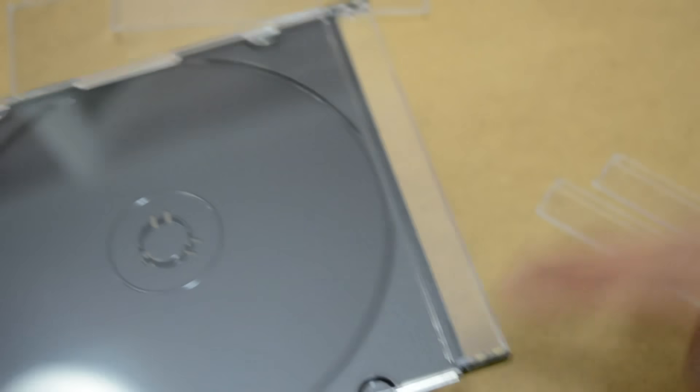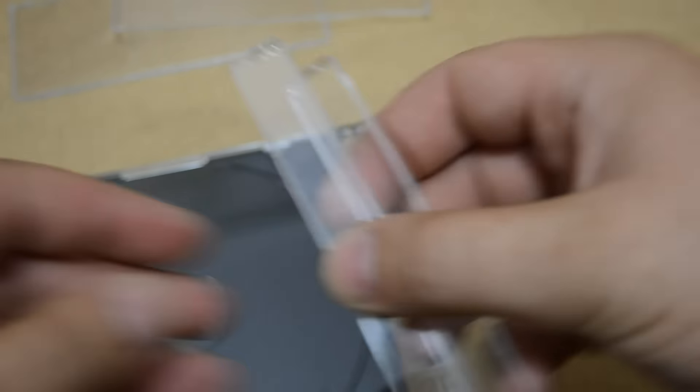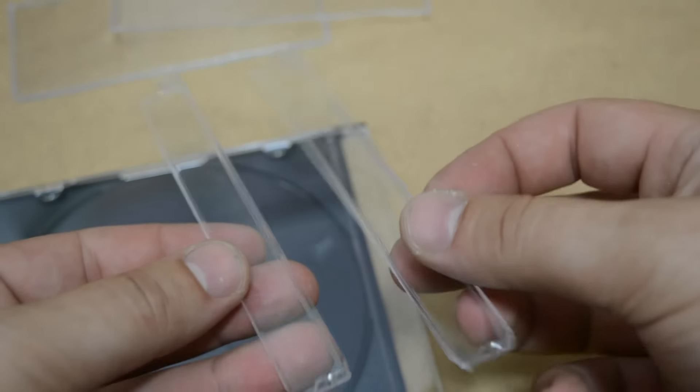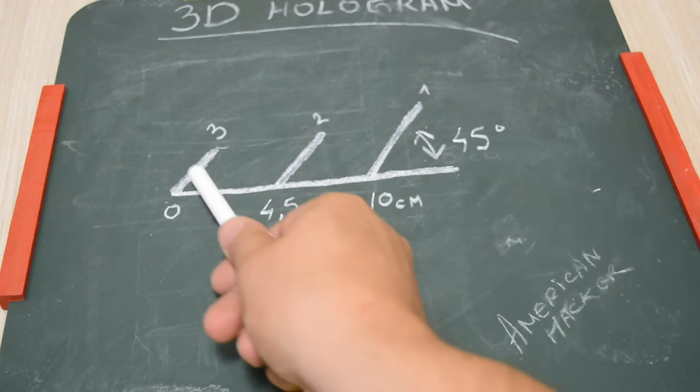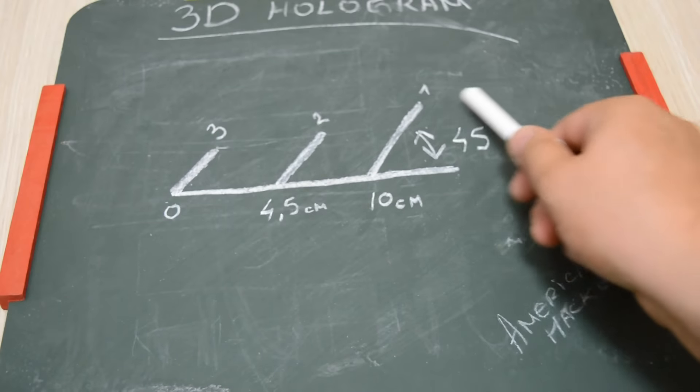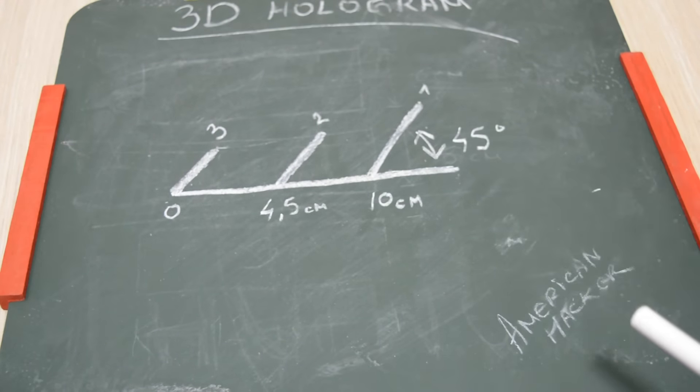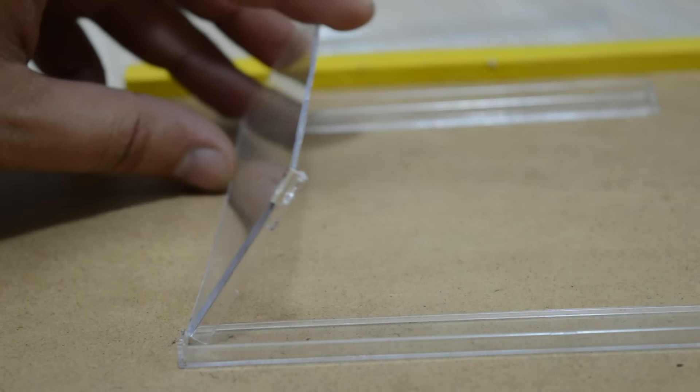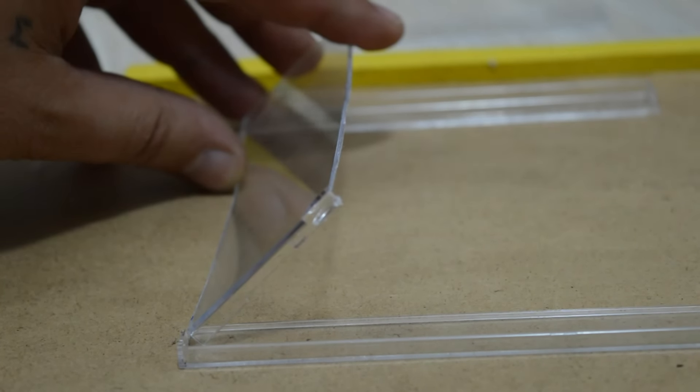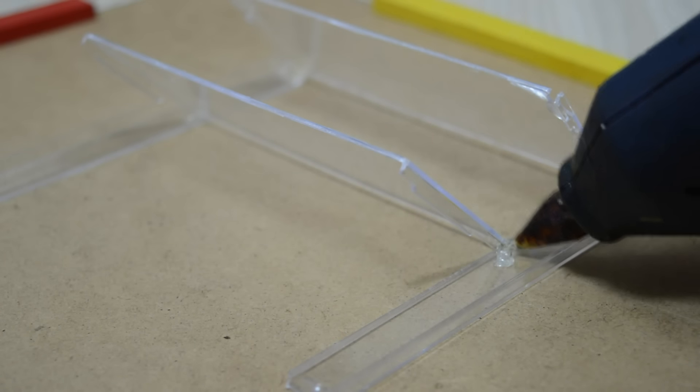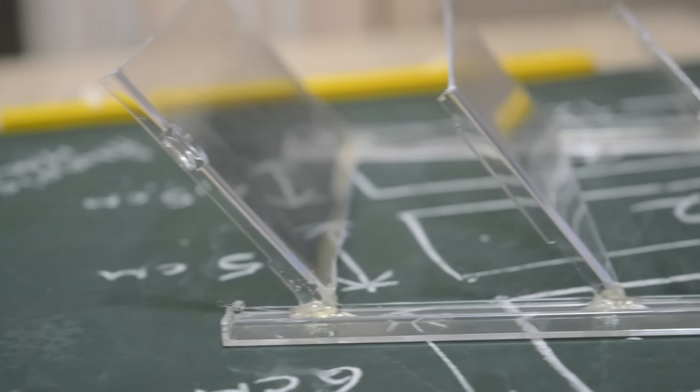On these 2 plastic pieces that we cut also from CD case, we gonna glue the 3 pieces that will reflect the images from tablet. All pieces must be placed at 45 degrees angle. Put small amount of glue on each piece and you will get something like this.